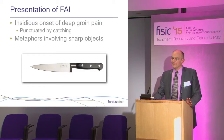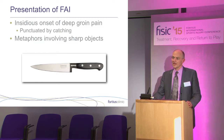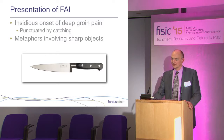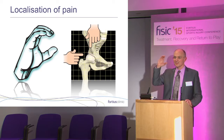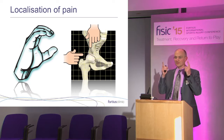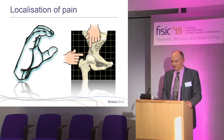Hip impingement presents with the symptoms of a torn labrum and the damaged articular cartilage at the front of the acetabulum. So it's this insidious onset of groin pain, punctuated by episodes of stabbing or catching. Quite often the patient describes the pain using metaphors involving sharp objects. They localise the pain using the thumb and index finger of the hand — the so-called C sign — and cup it round the front of their hip. They may also use their two index fingers, which converge on the anterior rim of the acetabulum, the so-called coordinate fingers.